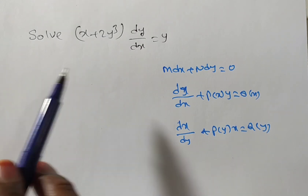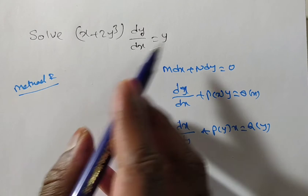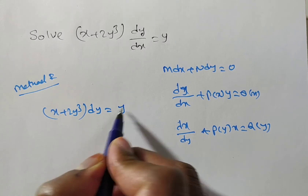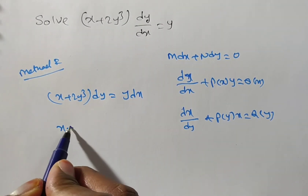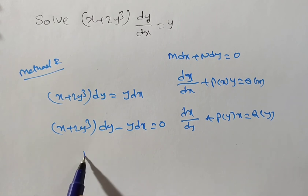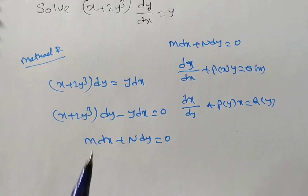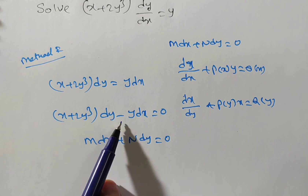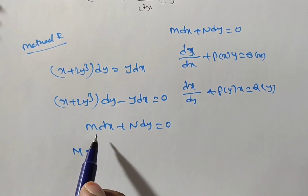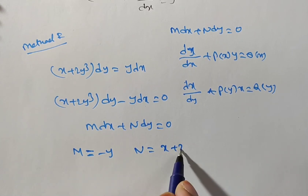Method 1: Take the left side — you will have (x + 2y³) dy = y dx. Simplifying, this becomes (x + 2y³) dy − y dx = 0. This is in the form M dx + N dy = 0. Here dy is first, not dx, so: M is the dx equation, which is −y; and N is the dy equation, which is x + 2y³.